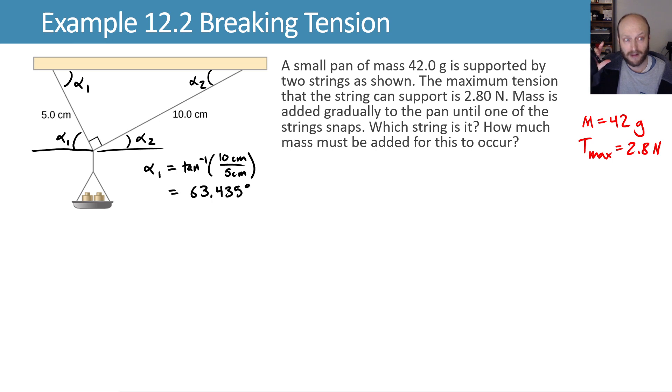Alpha 2 can be found by summing the angles in our triangle to 180, or by pulling the same trick. Alpha 2 is the inverse tangent of opposite over adjacent, giving us 26.565 degrees.